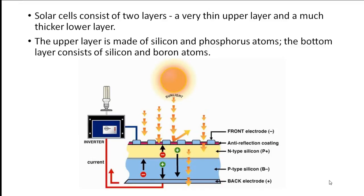Most solar cells in use today are thin wafers of silicon, about one hundredth of an inch thick. Most solar cells consist of two layers: a very thin upper layer and a much thicker lower layer.